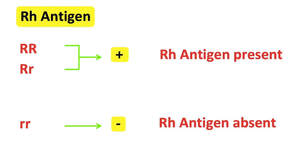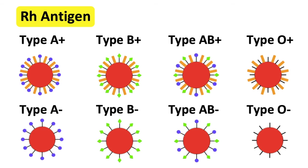There are eight different types of blood: type A positive, type A negative, type B positive, type B negative, type AB positive, type AB negative, type O positive, and type O negative.